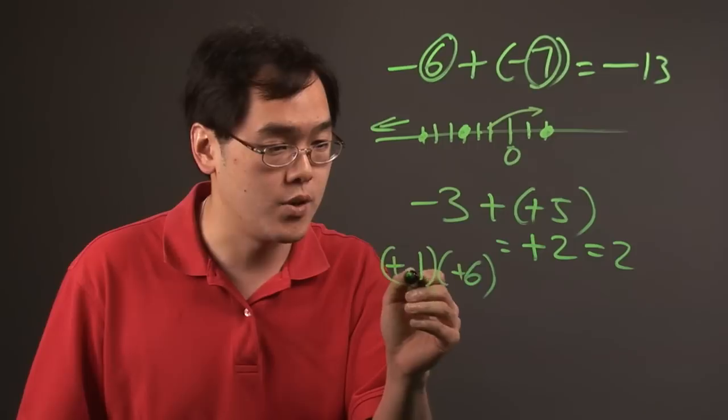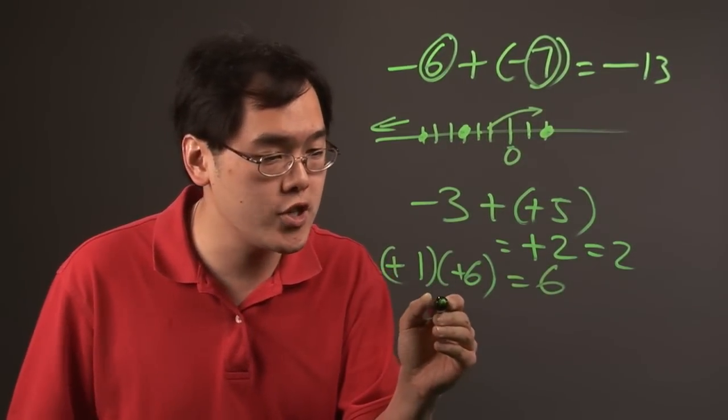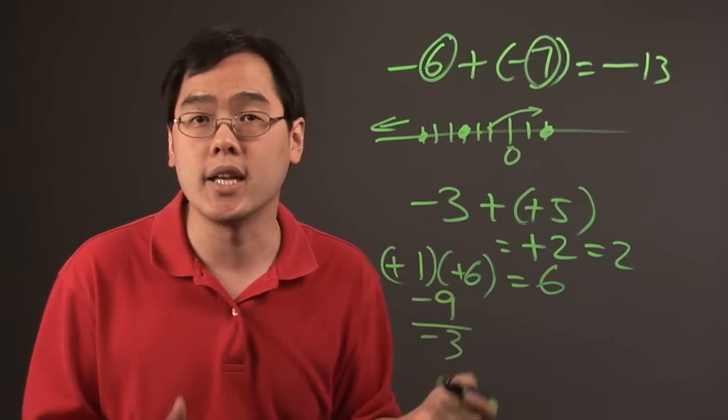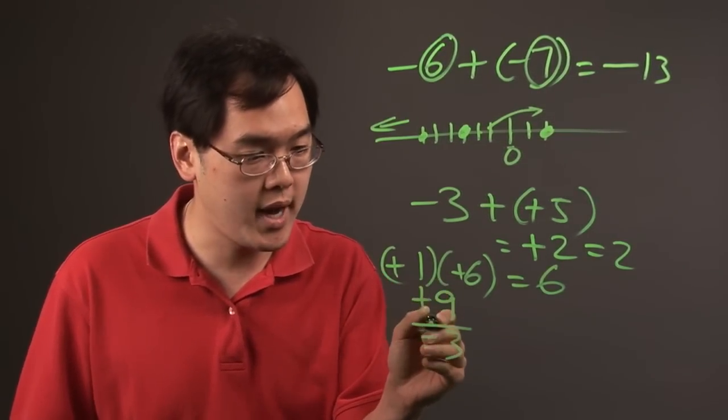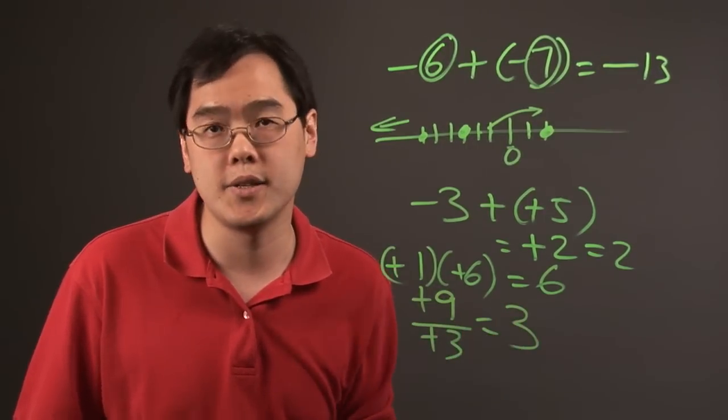So 1 × 6 is going to be 6. Similar logic occurs in division. If you have -9 ÷ (-3), negative and a negative is going to give you a positive. So -9 ÷ (-3) is really going to be positive 3.